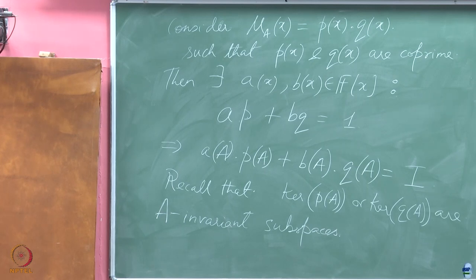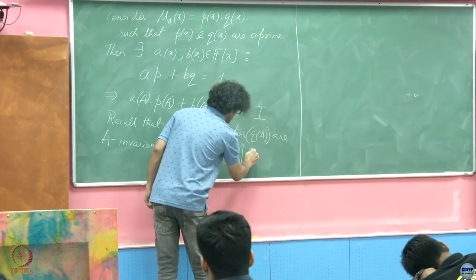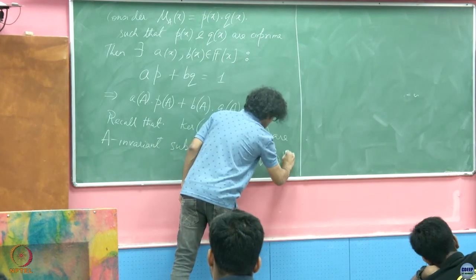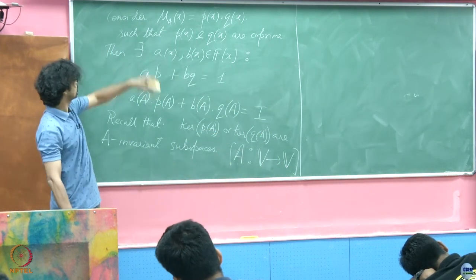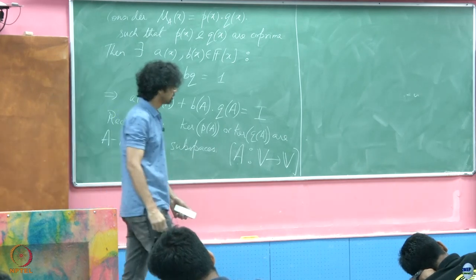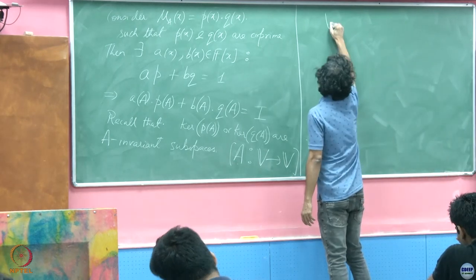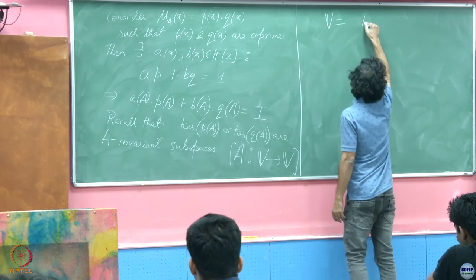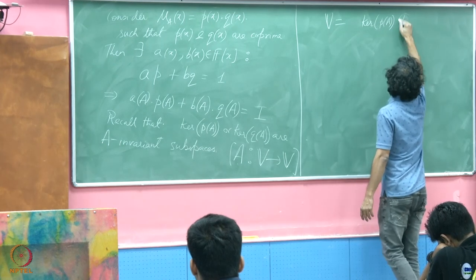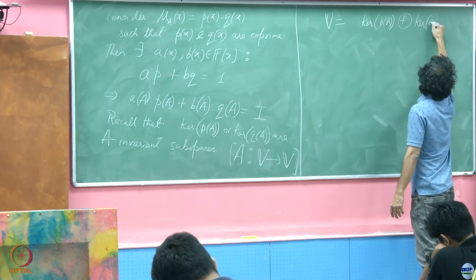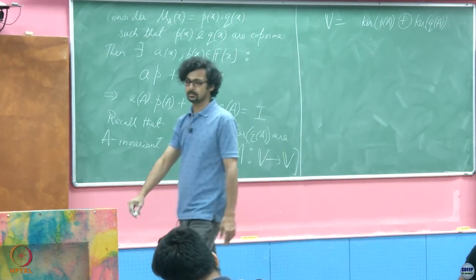This is all a setup for what we are now about to do. It goes without saying that A is an operator from V to itself where V is finite dimensional. The claim is that V = ker(P(A)) ⊕ ker(Q(A)) — a direct sum.